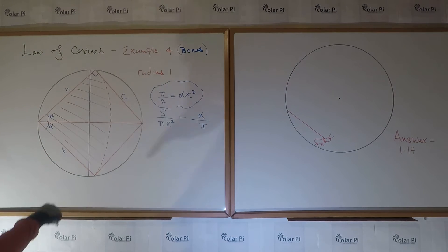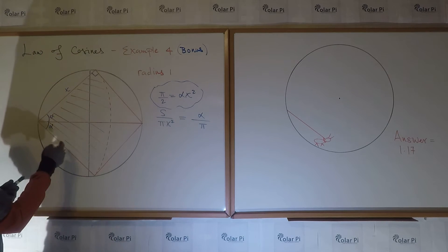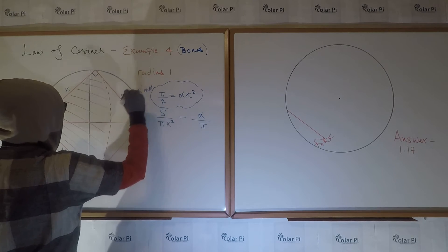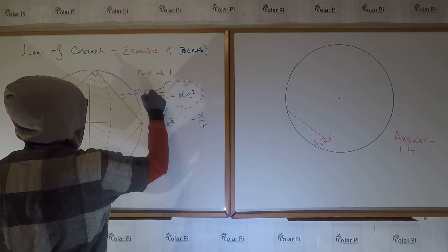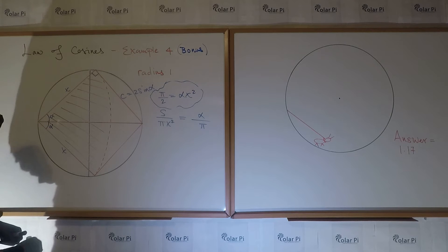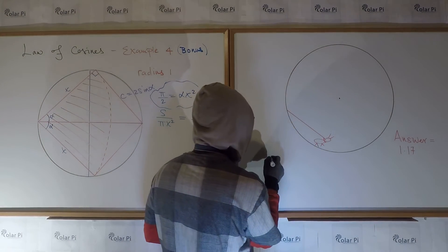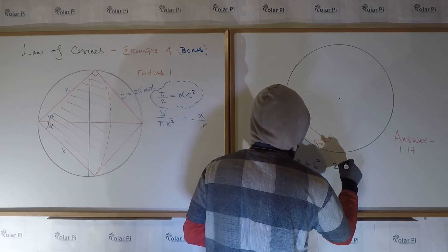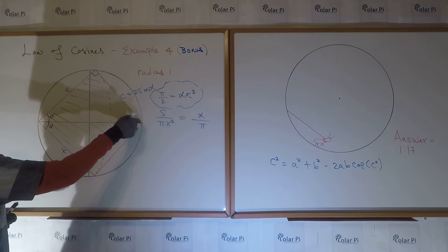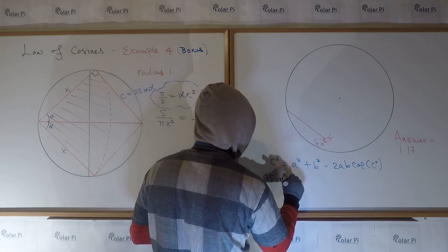This is where the Law of Cosines comes in. If you look at this right triangle, side c — since the length from here to here is two, twice the radius — c would have to be equal to two sine alpha. Now we apply the Law of Cosines to this triangle, where one side is two, another side is x, and the third side is two sine alpha. Writing the Law of Cosines for c: c squared equals four sine squared alpha.